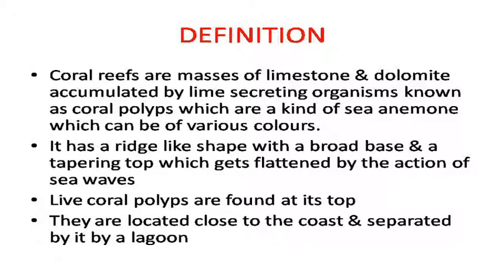Coral reefs are masses of limestone and dolomite, accumulated by lime-secreting organisms known as coral polyps, which are a kind of sea anemone which can be of various colors. It has a ridge-like shape with a broad base and a tapering top, which gets flattened by the action of sea waves. Live coral polyps are found at its top. They are located close to the coast and separated from it by a lagoon.